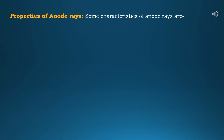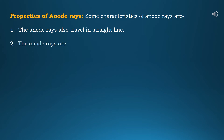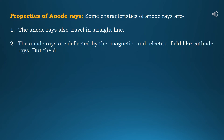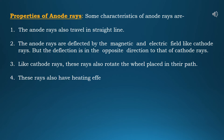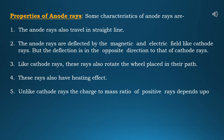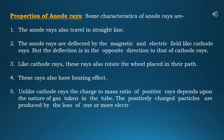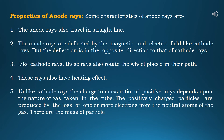Let's discuss the properties of anode rays. First, anode rays also travel in a straight line. Second, anode rays are deflected by magnetic and electric fields like cathode rays, but in the opposite direction. Third, like cathode rays, these rays also rotate a wheel placed in their path. Fourth, these rays also have a heating effect. Fifth, unlike cathode rays, the charge-to-mass ratio of positive rays depends upon the nature of the gas taken in the tube. The positively charged particles are produced by the loss of one or more electrons from the neutral atoms of the gas, so their mass depends upon the nature of the gas.